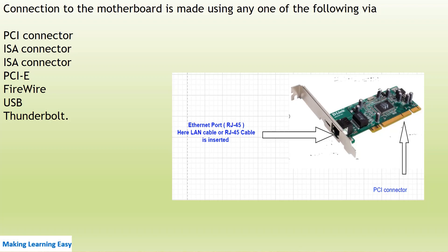One more thing to highlight: the connection to the motherboard is made using any one of the following connectors. As you can see in the screenshot, there is a PCI connector. There are different types of connectors available: PCI connector, ISA connector, PCIe connector, FireWire connector, USB, or Thunderbolt. These are the different types of connectors through which you can connect the NIC to the motherboard.